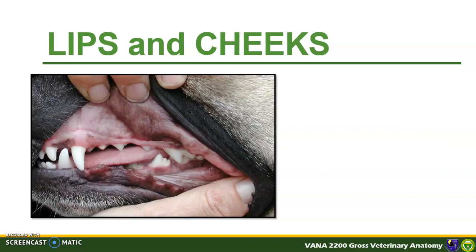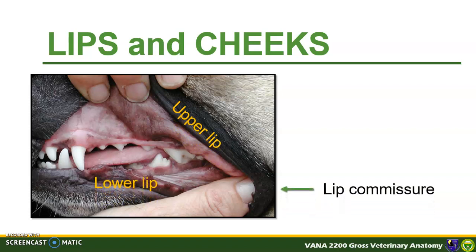Now let us discuss the different structures present or serving as boundary of the oral cavity. First is the lips. It forms the rostral and most of the lateral external boundaries of the vestibule. The upper lip and the lower lip meet at the angle of the mouth or the lip commissure. In dogs, the upper lip is pendulous and presses on the lower lip. The general looseness of the lips creates a large vestibule.